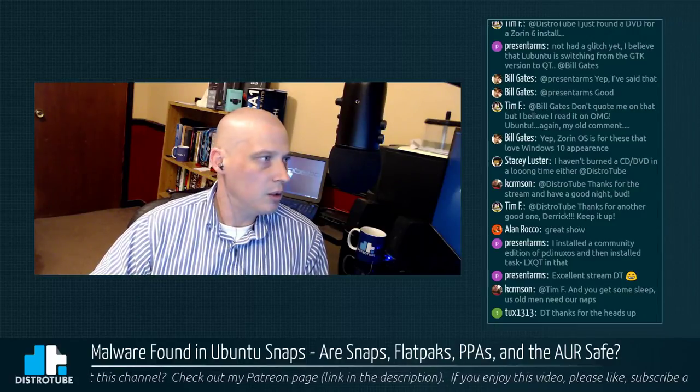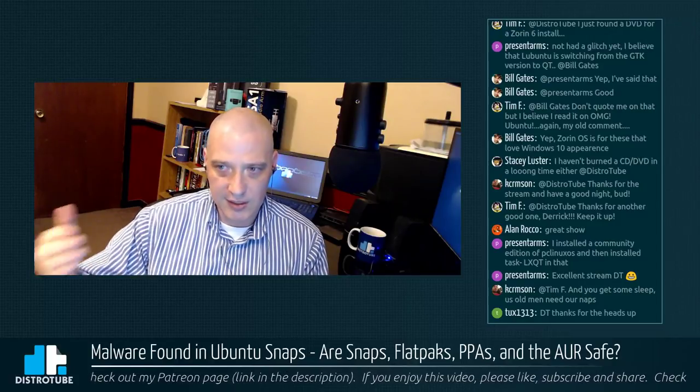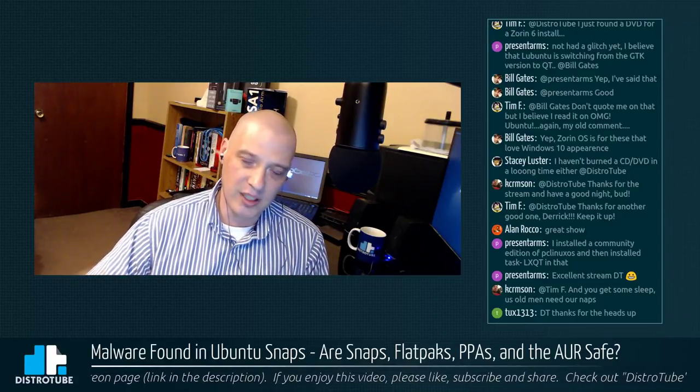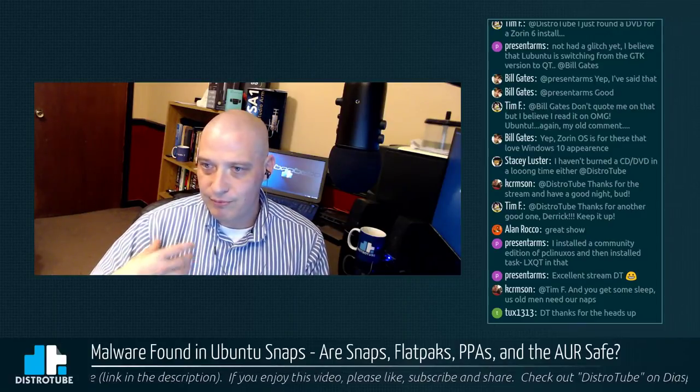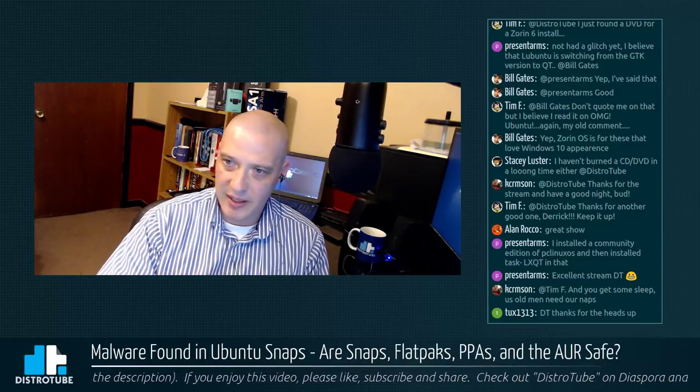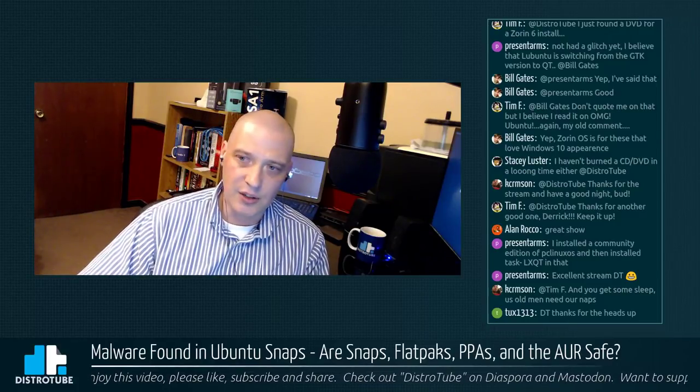Third-party stuff — PPAs, AUR, snaps, flatpacks, app images, anything you compile yourself from GitHub, Python scripts via pip, npm packages, Haskell packages via Cabal — you might want to check what these packages are doing and what they're installing on your system. Nobody's going to do that, myself included, but ultimately who is responsible? I am. If I install something and something bad happens to my machine, I wouldn't blame Manjaro or Ubuntu — it's my fault.